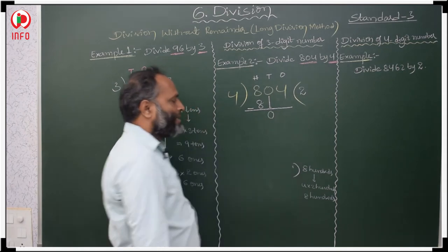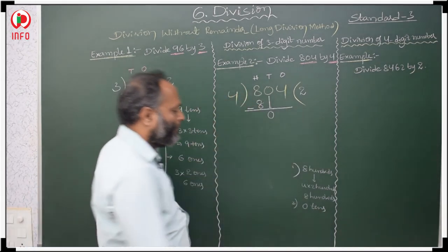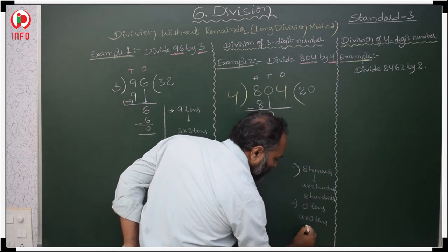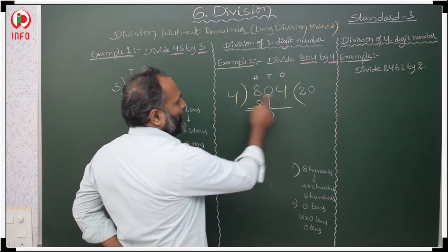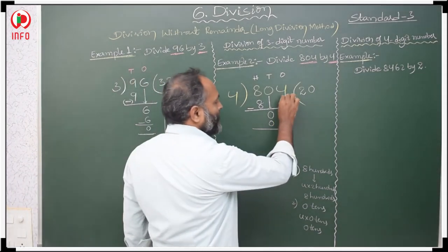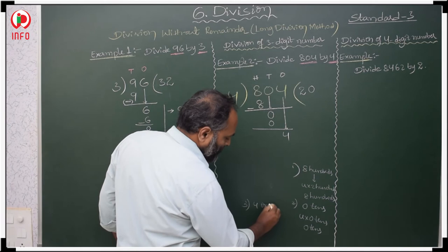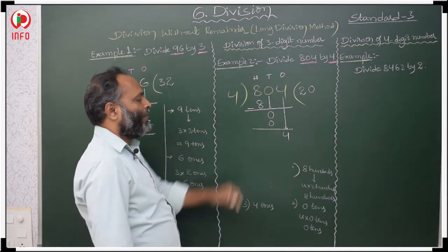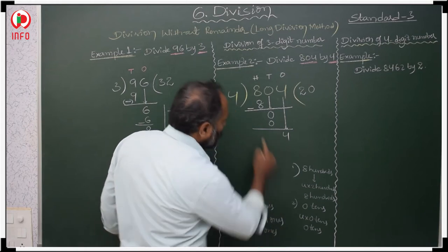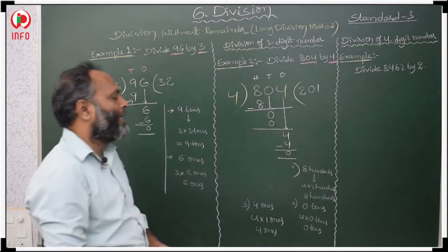The next place is 0 tens. When will you get 0 tens in the 4 table? 4 times 0 is 0 tens. So we write 0 in the quotient. After that, we copy the next digit 4. In the third step: 4 ones. When will you get 4 ones in the 4 table? 4 times 1 is 4 ones. 4 ones are 4. Same number minus same number is 0.